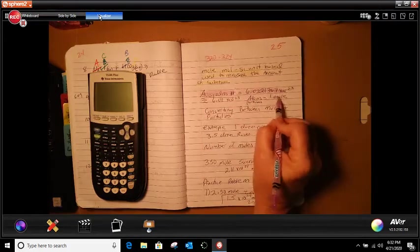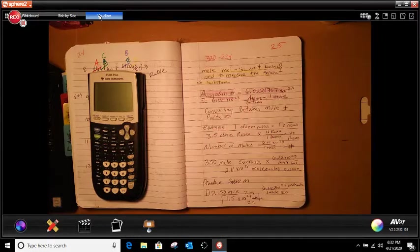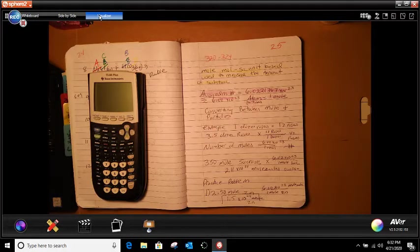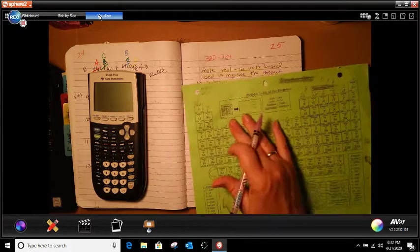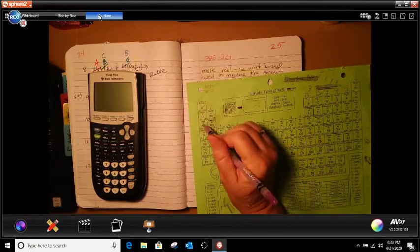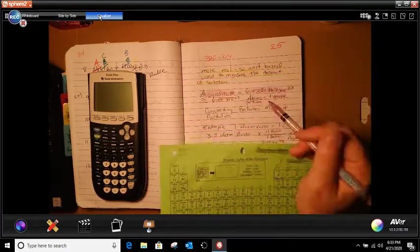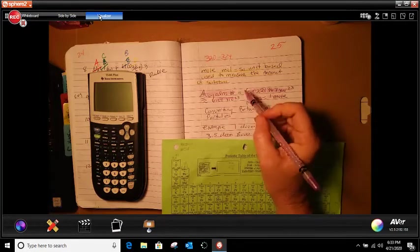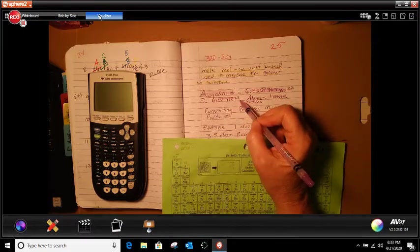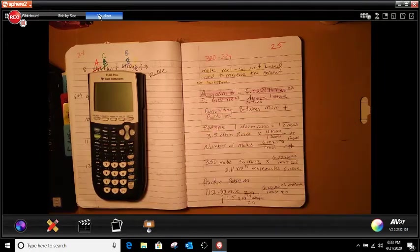particles there is in one mole of a substance. So if you're looking at the periodic table, you will see that one atom or one of these, each one of these, no matter how much it is, they're all considered one mole. And if you're talking about how many molecules are in there or particles that are in there, there's 6.02 times 10 to the 23rd for each one of these. So I'm going to make sure that you understand that.